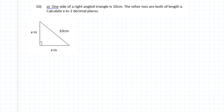As you can see, I've drawn a right angle triangle here where one side is 10 cm and the other two are both length x. The reason why I know that 10 cm is the hypotenuse is that the other two sides are both the same.